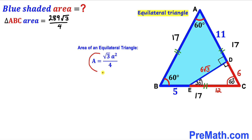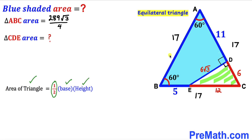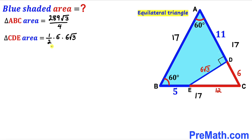Now let's calculate the area of right triangle CDE using area = (1/2) × base × height. The base is 6 units and the height is 6√3 units. So area of CDE = (1/2) × 6 × 6√3 = 18√3 square units.